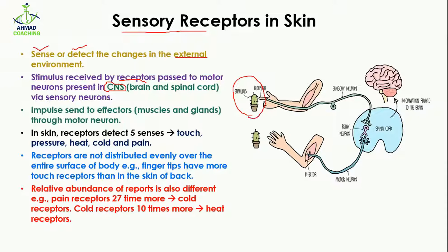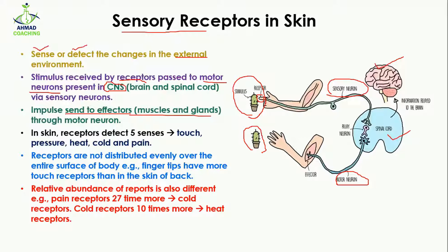For example, if you have accidentally pricked your finger, the receptors present in the skin send signals through the sensory neurons to the central nervous system — the brain and spinal cord. The motor neurons in the brain and spinal cord then send impulses to the effectors. The effectors may be muscles or glands, and as a result you are going to pull your hand away from the cactus.